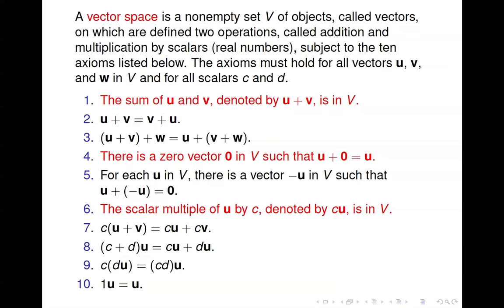We have this collection of objects and these two operations, and they are subject to ten axioms. These axioms must hold for all vectors u, v, and w in the set V, and for all scalars c and d. Number one says the sum of u and v, denoted by u plus v, is in the set V. So if you take any two vectors from the set and add them together, you get another vector that is still in the set. This property is called closure — we say the set is closed under addition if this property holds.